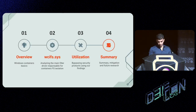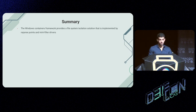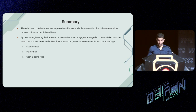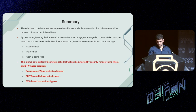To summarize: the Windows Container Framework provides a file system isolation solution implemented via reparse points and mini filter drivers. Through reverse engineering of the WCIFS driver, we were able to create a counterfeit container and insert our process into it, leveraging the framework's IO redirection mechanism to cause files to be overridden, deleted, or copied without detection by security products. As a result, we identified new bypasses of file system-based malware protection, file write restrictions, and ETW-based correlations, without relying on any other known bypass techniques.